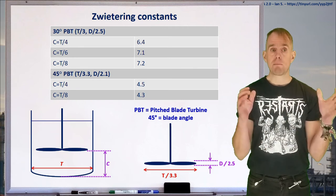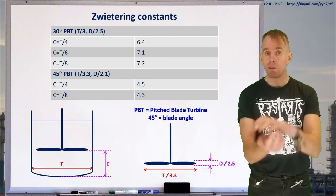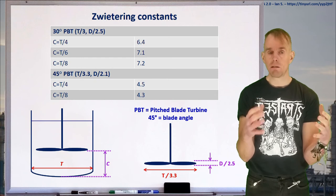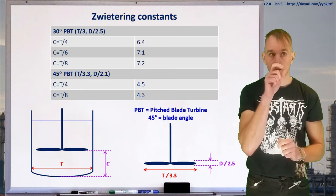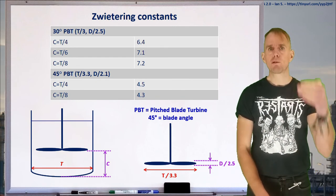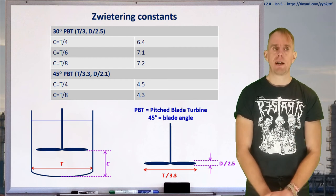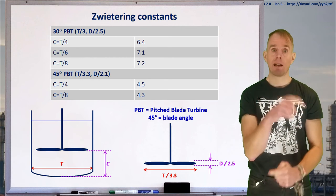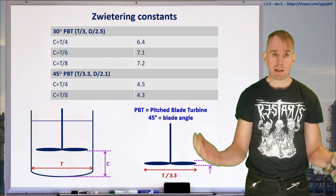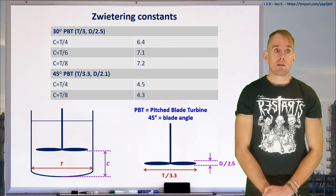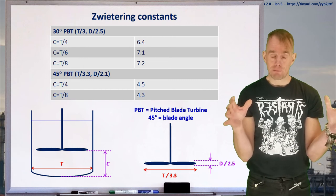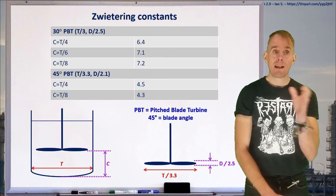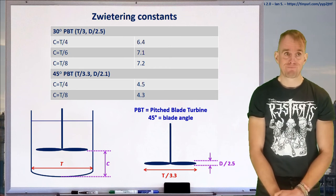D over 2.5 is our impeller diameter D divided by 2.5, and that gives you your blade width. So T over 3.3, T is tank diameter. T over 3.3 gives you your impeller diameter, D. Then D over 2.5 gives you your blade width. OK, so that's what those next two things in that table refer to. Then you've got two rows. C equals T over 4. C equals T over 8. Now, C is the clearance between the base of the impeller and the base of the tank. So, in effect, if you imagine that impeller rotating, it's going to be pushing liquid down into the tank, and then the liquid will rise up the walls, and so you get this sort of circulating flow field. So C over 2.4 is where you have 2.4... C equals T over 4, sorry, it's where you've got a quarter of the tank diameter in terms of clearance underneath your impeller. And then that will give you a Sveterine constant S of 4.5.